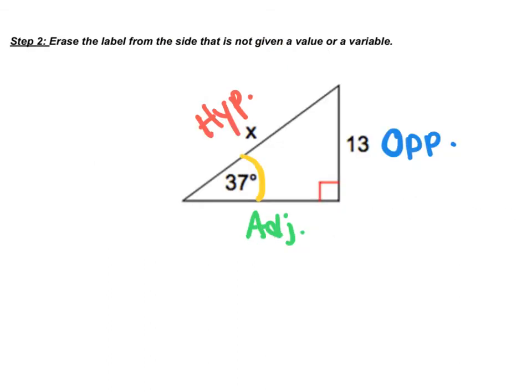The next step is to erase the label from the side that is not given a value or a variable. So in this case, the hypotenuse has an x, the opposite has a 13, but the adjacent has nothing. So we are going to erase the word adjacent, leaving only two labels.